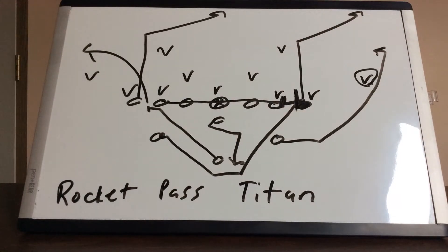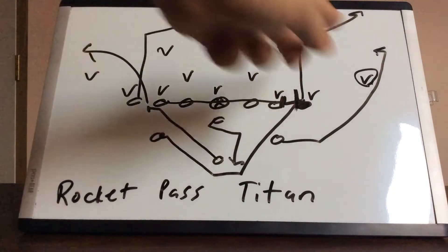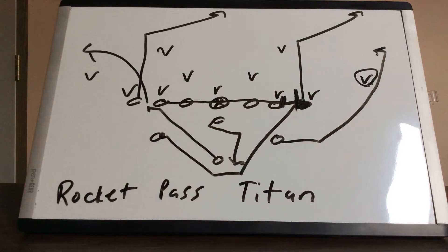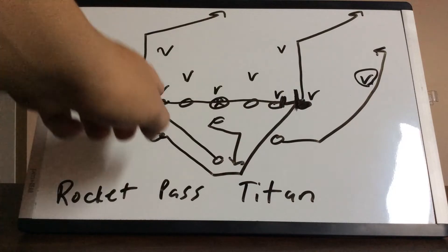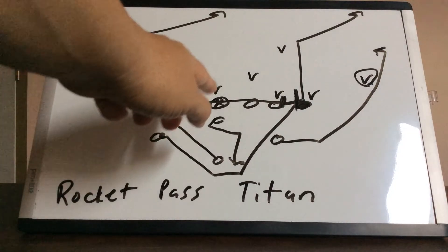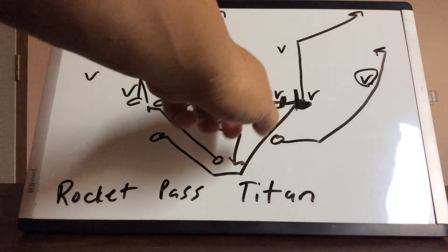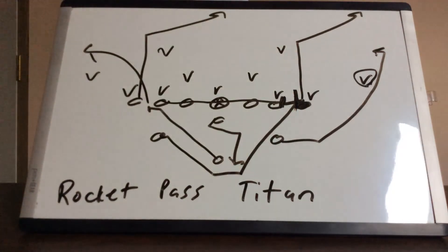So what ends up happening is the line is all going to slide to the side of the rocket. So they're all going to step to the right and the tackle is going to block the B gap, guard blocks the A gap, center blocks play side A, guard blocks play side B, tackle blocks play side C.